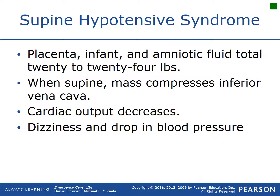Because the placenta and uterus develop midline, they sit right over the inferior vena cava. When the patient lies supine, all that weight can compress the inferior vena cava, reducing blood return to the heart and lowering cardiac output. This can cause dizziness, lethargy, and a drop in blood pressure — the patient may feel like they're going to pass out, all due to the pregnancy compressing that inferior vena cava.